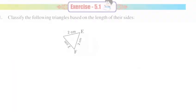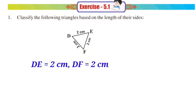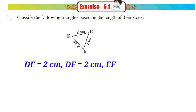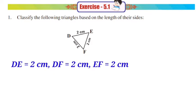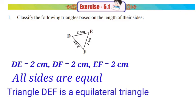Next triangle DEF. In this triangle, the side DE is equal to 2 cm, the side DF is also equal to 2 cm, the side EF is also equal to 2 cm. All three sides are equal, so this triangle is called an Equilateral Triangle.